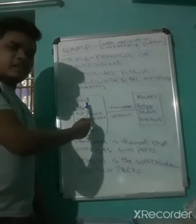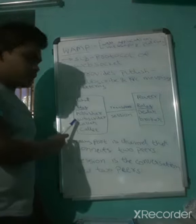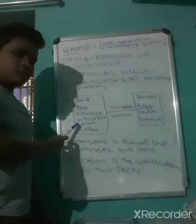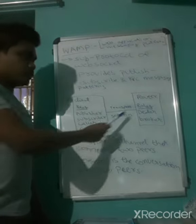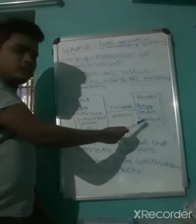Here it is client and it is rotor. The roles of client are publisher, subscriber, caller, and query. Whereas the roles of rotor are dealer and blocker.